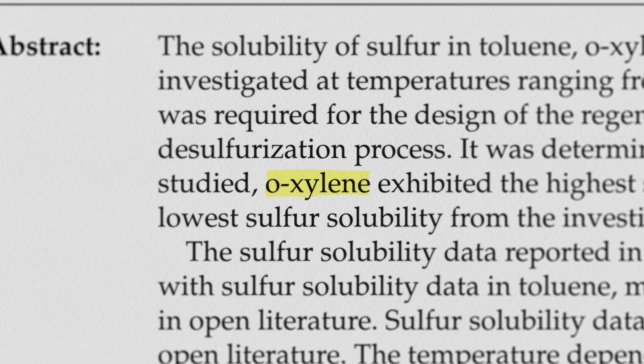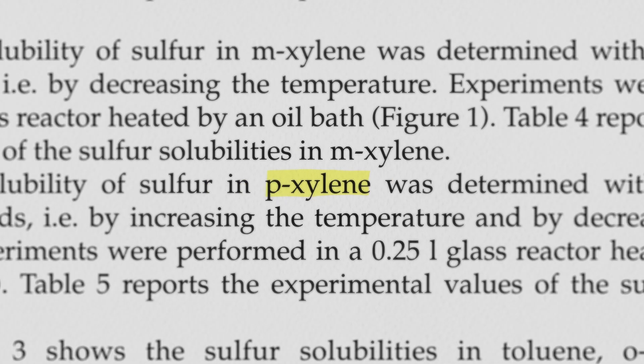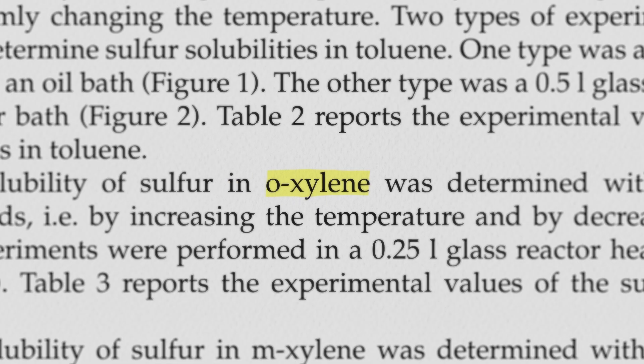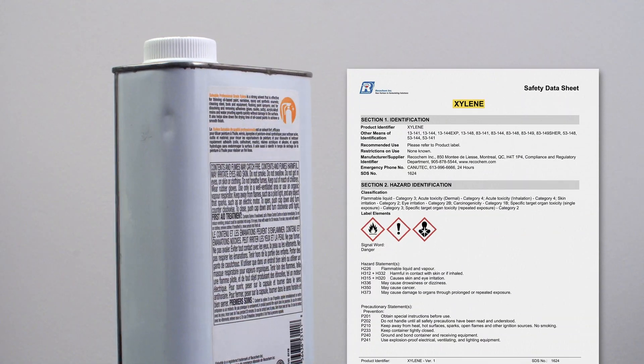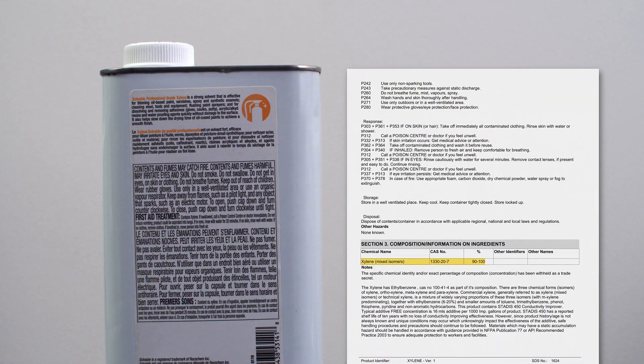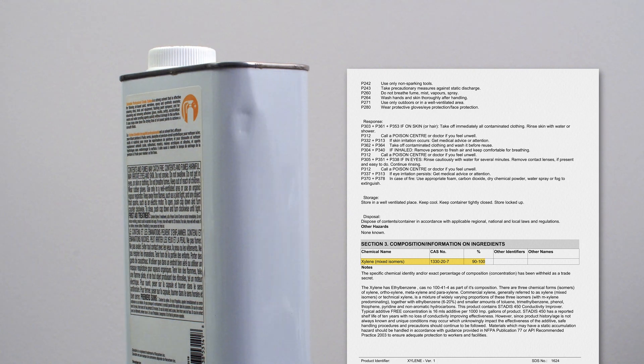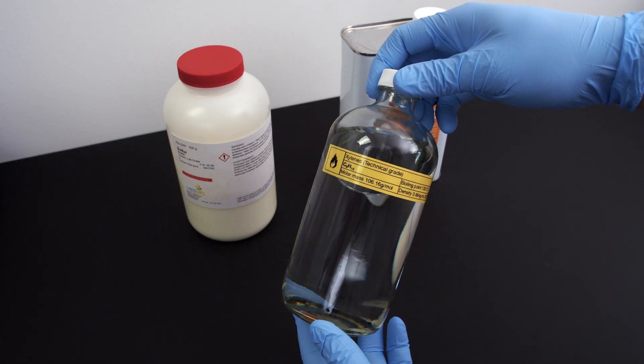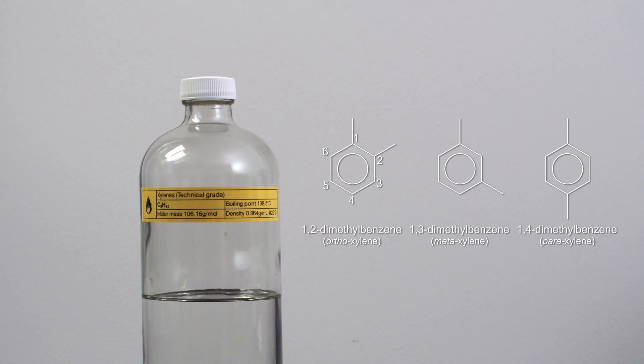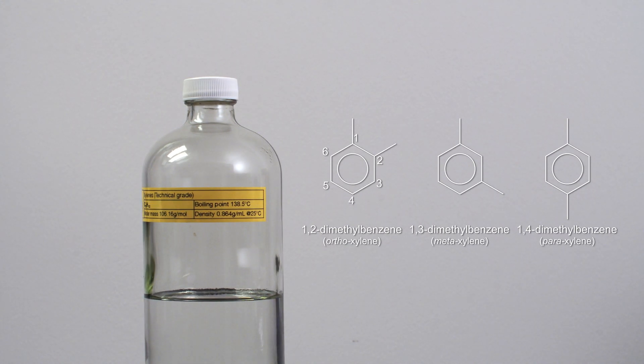But why xylene? Good question. Let me explain the advantages of using xylene over toluene. Firstly, it is cheaper than toluene and readily available in hardware stores. It is available as a relatively pure solvent, as you can see from its MSDS. The only constituent is xylene, which is the mix of all three isomers of dimethyl benzene and nothing else.